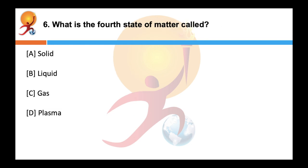What is the fourth state of matter called as? Answer is D — plasma. In plasma, the medium is in the form of positive and negative ions. Plasma occurs in the atmosphere of stars, including the sun, and in discharge tubes.